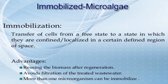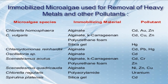Immobilized microalgae: this refers to the transfer of cells from a free state to a state in which they are confined or localized in a defined region of space. Advantages of immobilized microalgae include reusing the biomass after regeneration, avoiding filtration of treated wastewater, and the ability to immobilize more than one microorganism. The immobilizing materials used can be alginate, K-carrageenan, polyurethane foam, or silica gel. These microalgae are immobilized on these materials to remove specific pollutants.